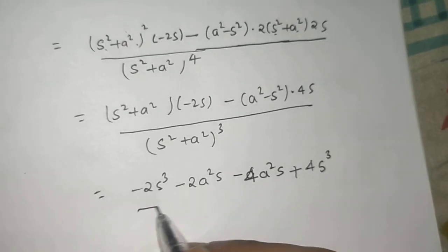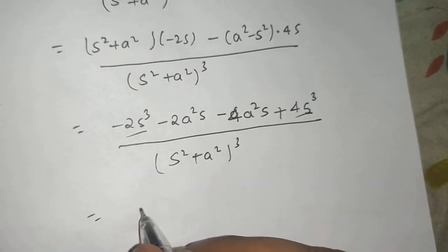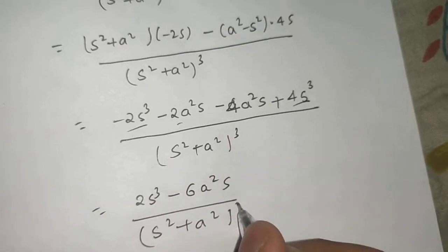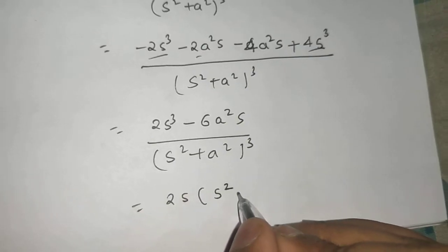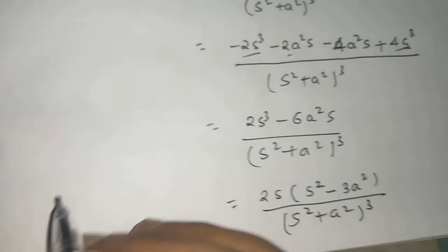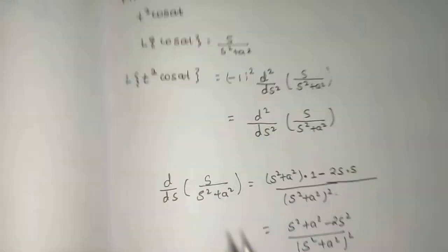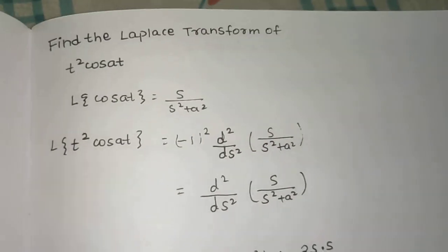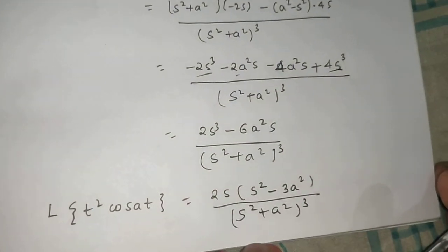Collecting terms: 4s³ − 2s³ = 2s³, and −2a²s − 4a²s = −6a²s. Taking 2s common: 2s(s²−3a²) divided by (s²+a²)³. So the Laplace transform of t² cos(at) is 2s(s²−3a²)/(s²+a²)³. The approach was: find Laplace of cos(at), apply the multiplication by t property, then compute the double derivative.